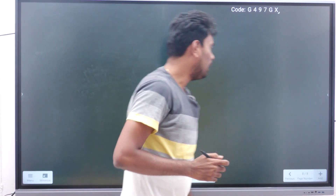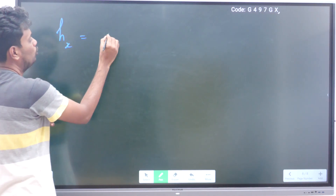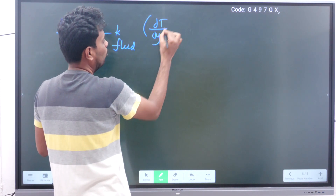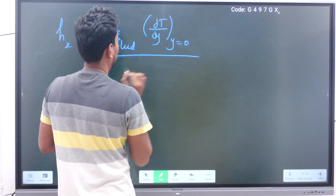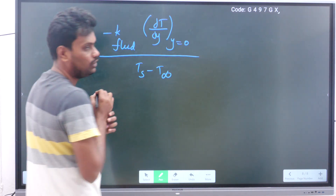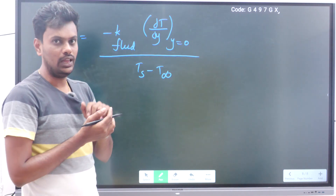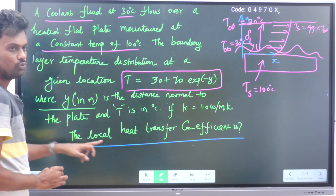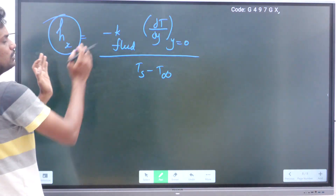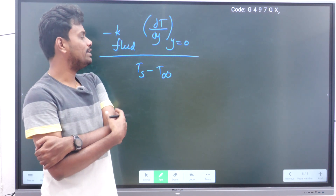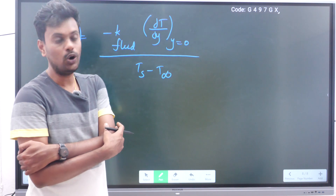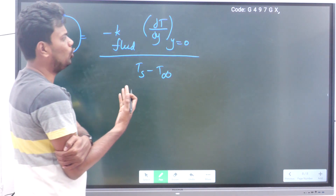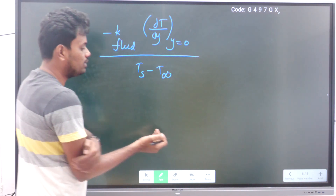For the thermal boundary layer thickness concept, the formula to find the local heat transfer coefficient is: h_x = −k_fluid · (∂T/∂y)|_(y=0) divided by (T_s − T_infinity). We studied this formula, and now we are going to use it. We need ∂T/∂y evaluated at y = 0, with T_s = 100°C and T_infinity = 30°C.